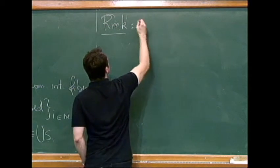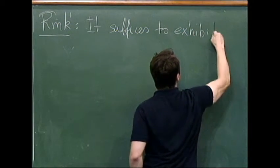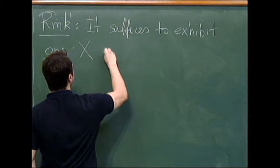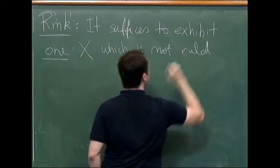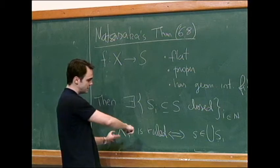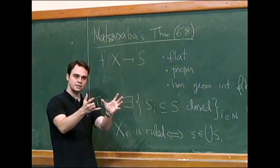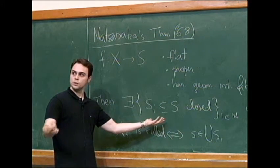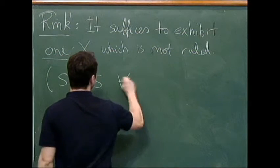So let me make this clear. The remark is this, it suffices to exhibit one X, one complete intersection which is not ruled. Right? Because if one is not ruled, it means that the point is not in any of those S's. It's not in the union of those S's. So this means that each of the S's have to be proper inside S. They cannot be all of S. So they're proper subvarieties. So if one is not ruled, then S_I is different from S for all I.